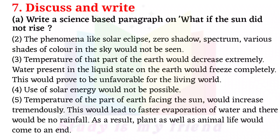4. Use of solar energy would not be possible. 5. Temperature of the part of the earth facing the sun would increase tremendously. This would lead to faster evaporation of water, there would be no rainfall, and as a result, plants as well as animal life would come to an end.